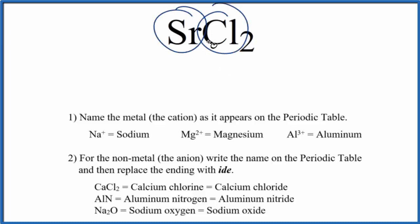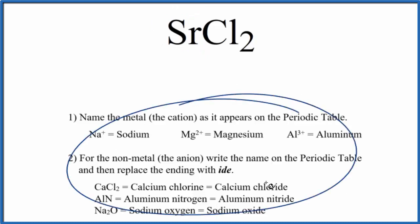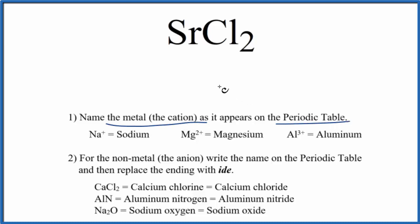Specifically, we have two different elements. It's binary ionic, and we'll use these rules to write the name. For the metal, we'll name that as it appears on the periodic table. So Sr, that's strontium.